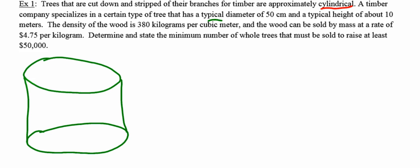It says the typical diameter is 50 centimeters. So if the diameter is 50 centimeters, I know the radius is 25 centimeters. The height of this tree is typically about 10 meters, so I'll label the height. The density of the wood is 380 kilograms per cubic meter. Well, the density isn't going to help me find volume or surface area, so I'm going to hold off on that. And the mass sold at $4.75 per kilogram—that's not going to help me find surface area or volume, so I'm putting that on the back burner for now.